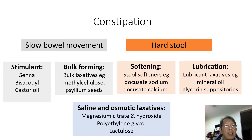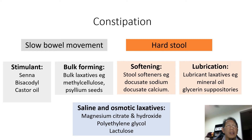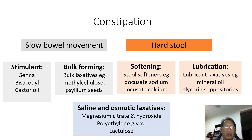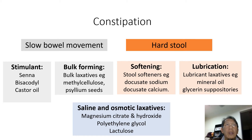Examples of these drugs are senna, bisacodyl, and castor oil. For bulk-forming laxatives, the action is by forming gels in the large intestine, causing water retention and intestinal distension, thereby increasing peristalsis activity.